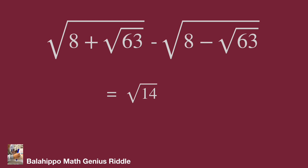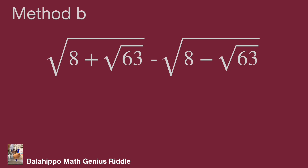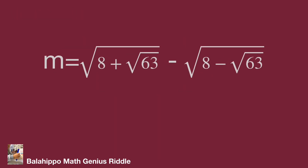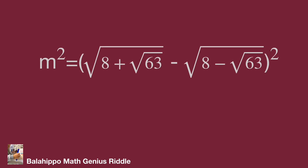Now let's go to Method B. We notice that the two items contain plus √63 and minus √63. If we connect them, we might eliminate those square root terms. So we define m equal to the square root of (8 + √63) plus the square root of (8 − √63), and then square both sides of the equation.